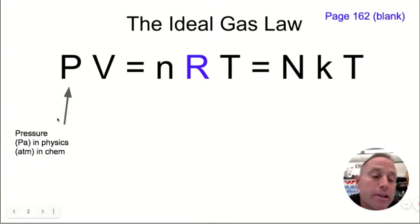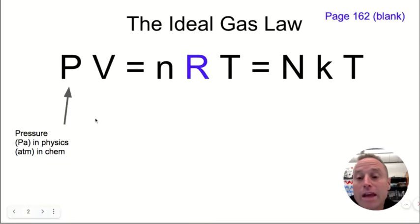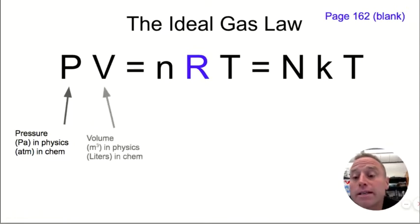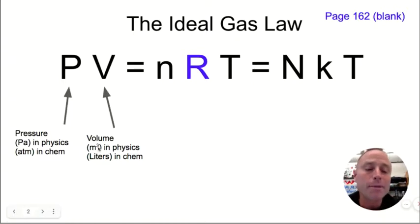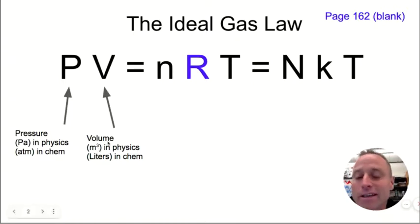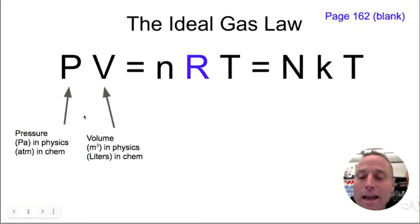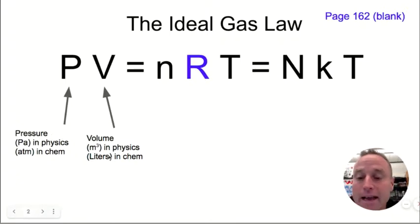P stands for the pressure of the gas. In physics we measure pressure in pascals, which is the same as a newton per meter squared. In chemistry you tend to use atmospheres. For volume, in physics we use the base unit of cubic meters, where chemists tend to use liters. We're going to stay with pascals and meters cubed.